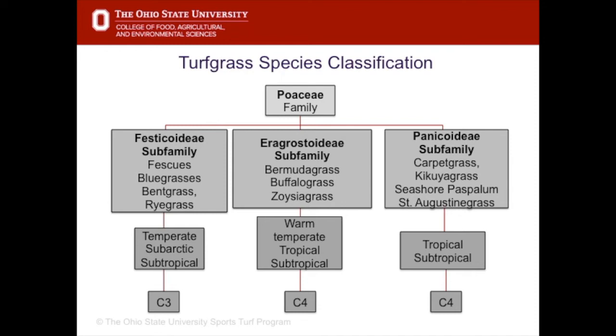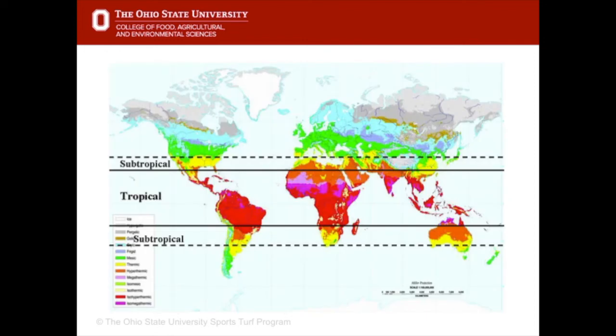These grasses are adapted to warm temperate, tropical, and subtropical regions and we refer to them as C4 grasses. As you can see from this map, the states in the southern part of the United States and all the other countries depicted in yellow, orange, red, and purple are tropical and subtropical zones where C4 grasses are adapted to grow.